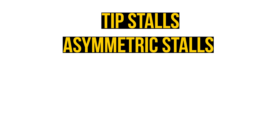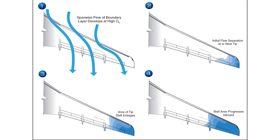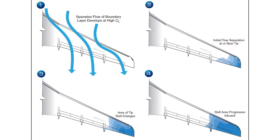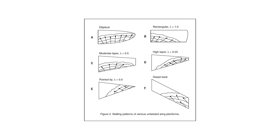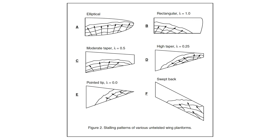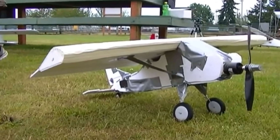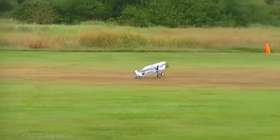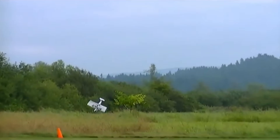Let's move into defining tip stalls, asymmetric stalls, spins, and the differences between all of them. Once and for all, what's a tip stall? A tip stall is real — it's a stall that occurs on the tip of the wing first, rather than the whole wing or just on the inboard section. Wing types more susceptible to tip stalls are swept wings, wings with a higher taper ratio, and even poorly designed or built wings with odd twists throughout the span, leading to inconsistent angles of attack across the wing in flight.